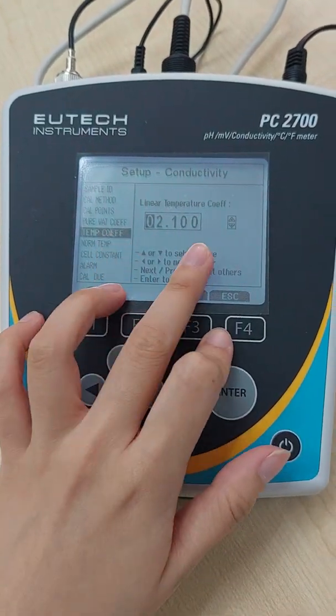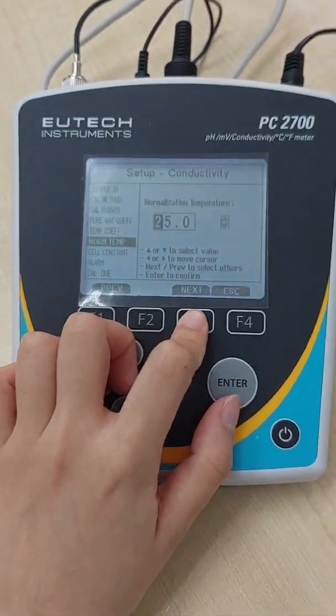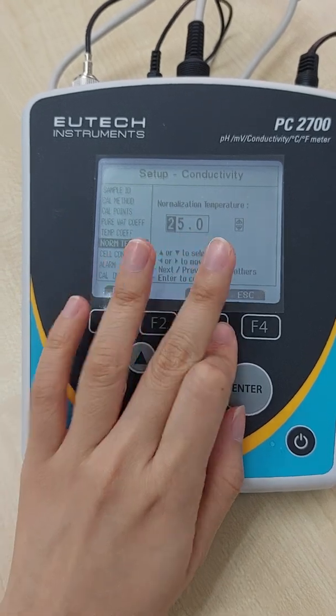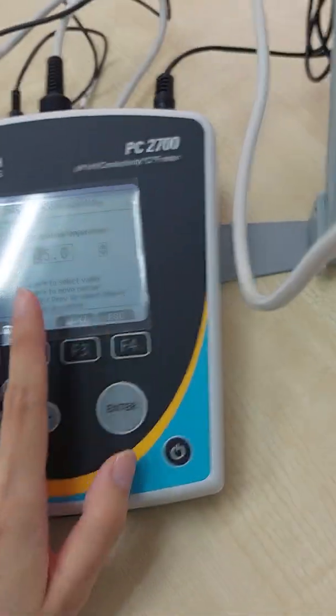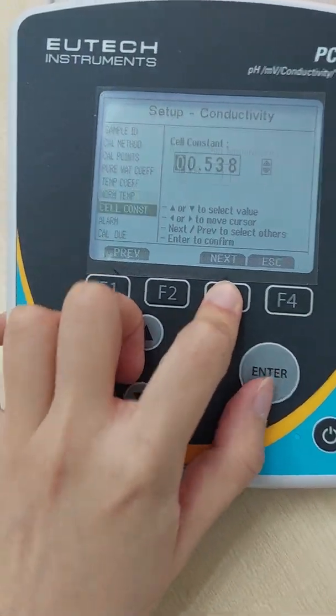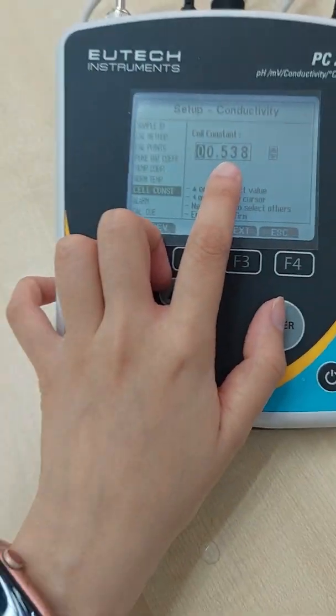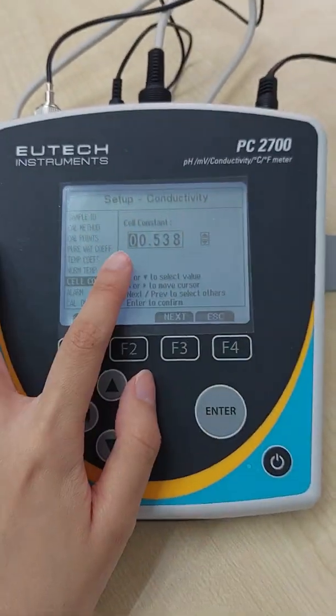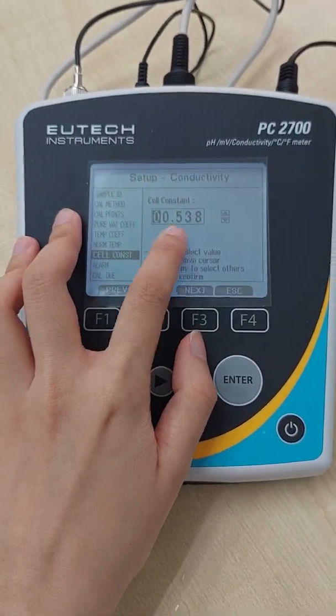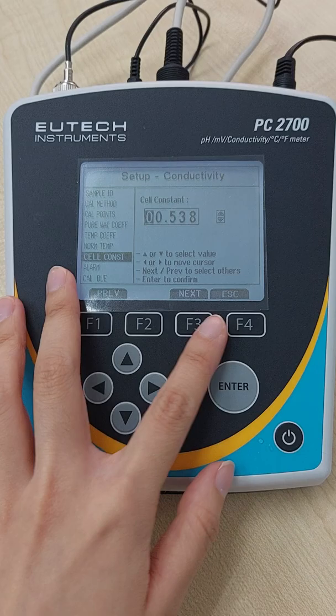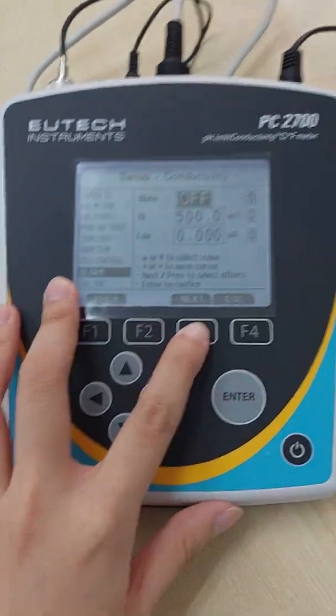Temperature coefficient, we just leave it like this. Normal temperature, we don't have to set because we have the electrode. So constant, this is the one that can be found on the conductivity probe, but for this meter they already pre-set it for you, so you don't have to do any adjustment.